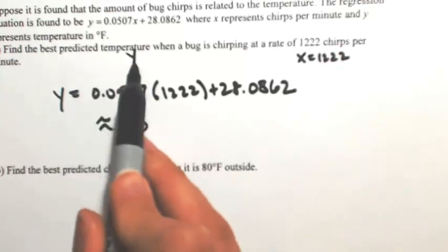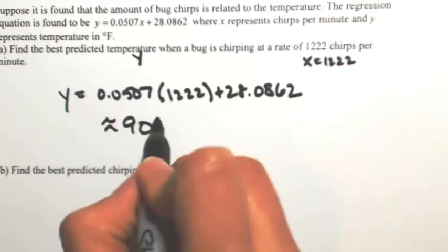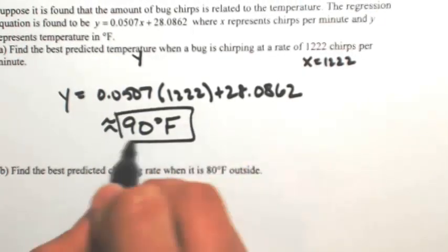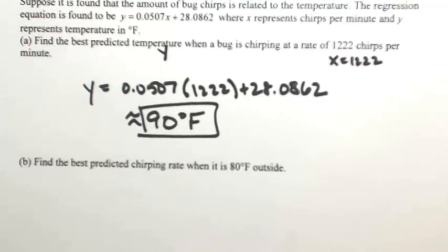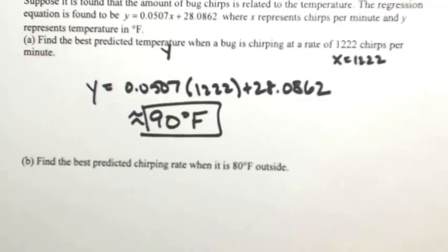So the best predicted temperature was in degrees Fahrenheit, so make sure you have the units on there. So when the bugs are chirping at a pretty large rate, 1,222 chirps per second, it's really hot outside, 90 degrees.